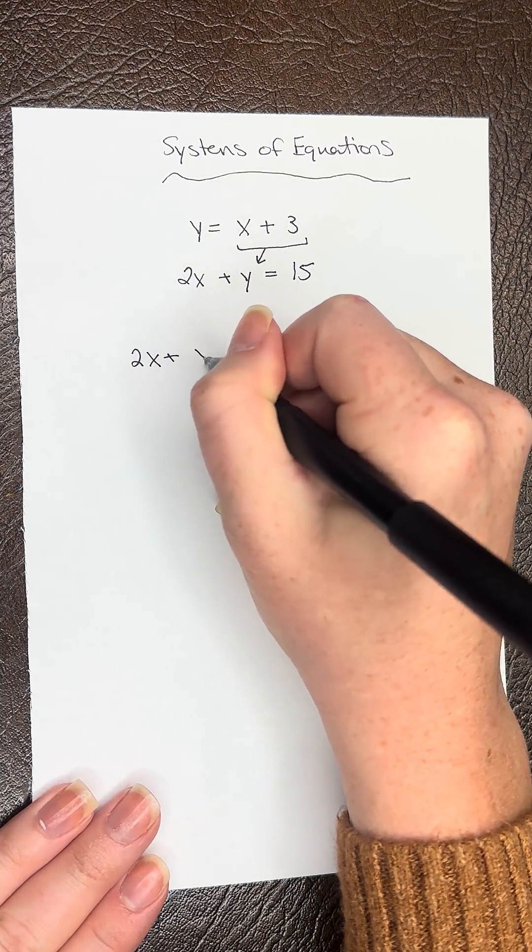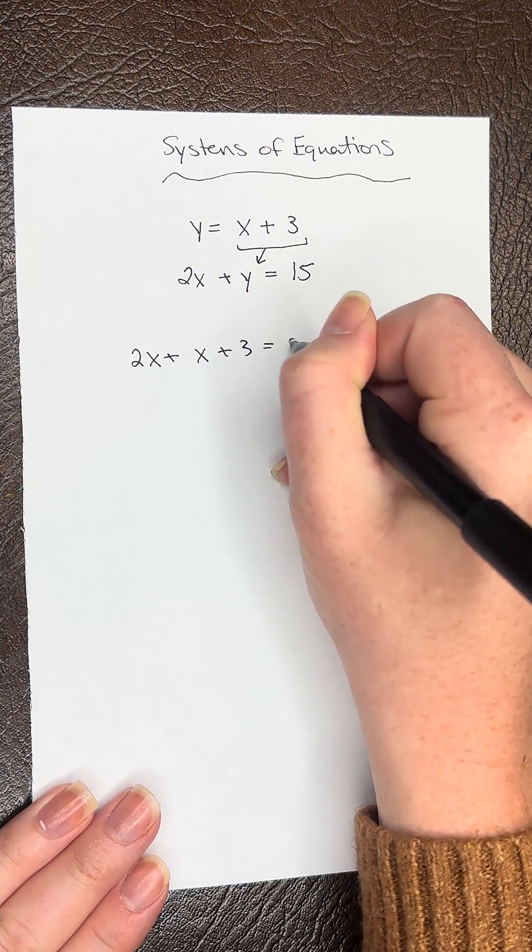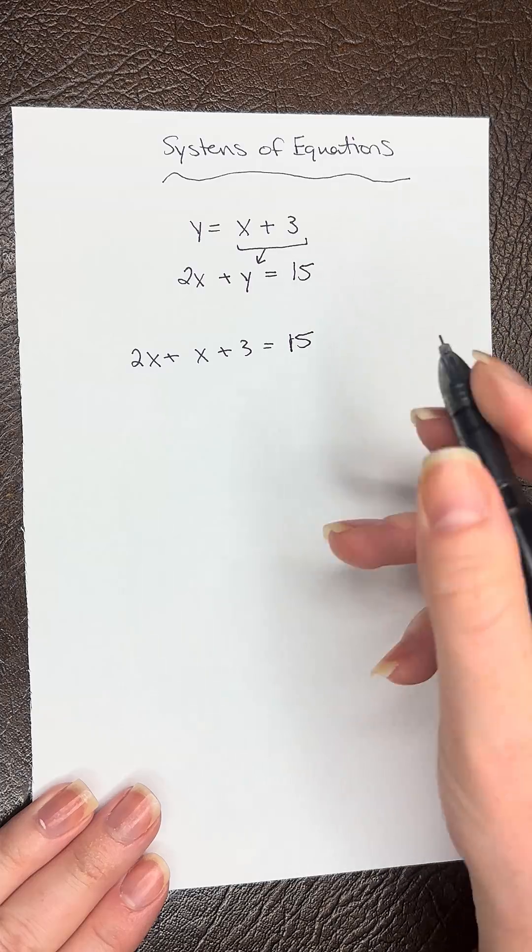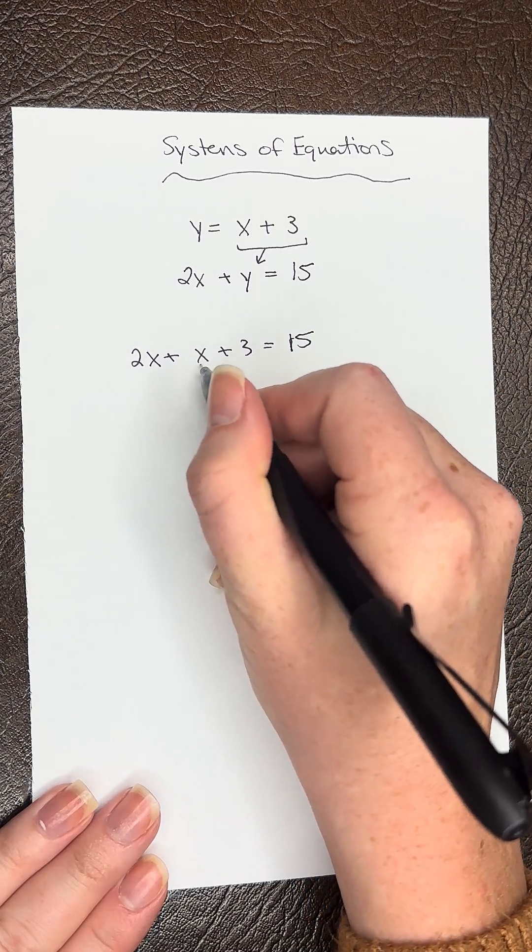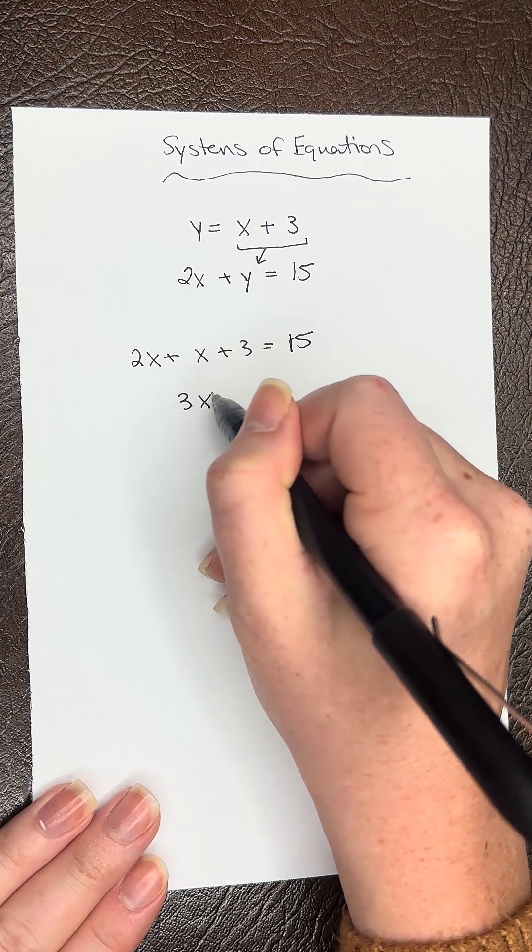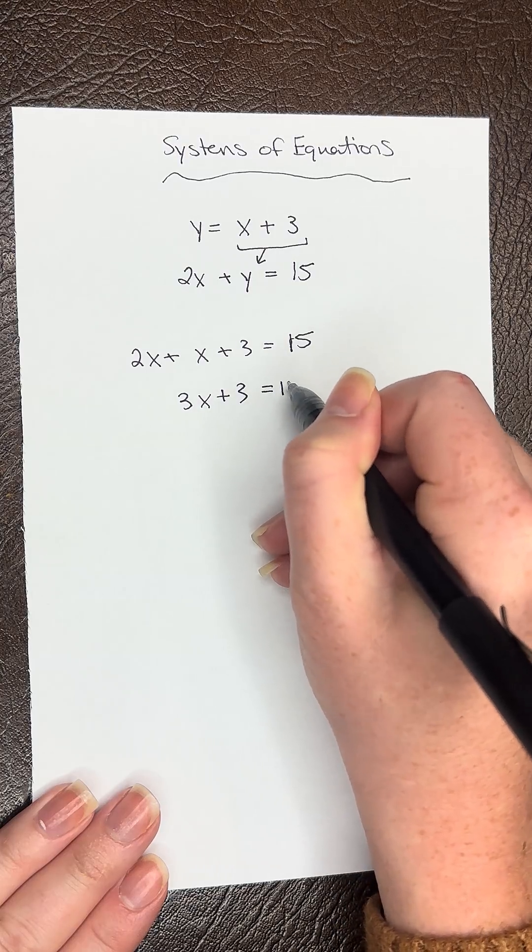So we have 2x plus x plus 3 equals 15. Now we want to combine our x terms. So we're going to have 2x plus 1x, that gives us 3x plus 3 equals 15.